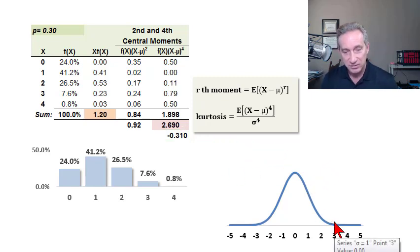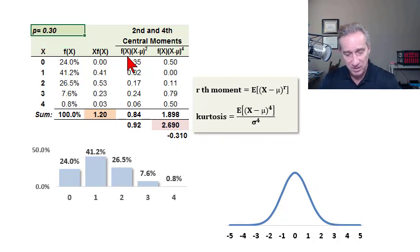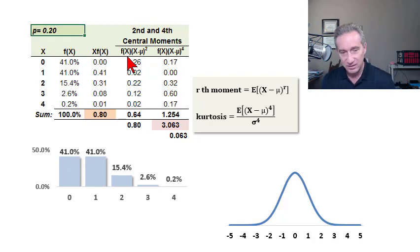And just for example, if I take this probability of 0.3 and shift it to 0.2, 20% of success, I happen to get an outcome here for the heavy-tailedness or kurtosis of the distribution of 3.063. So that's my kurtosis. Subtracting three in this case gives me a positive value.